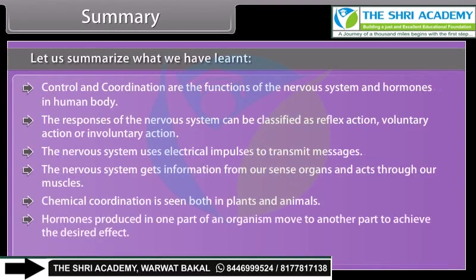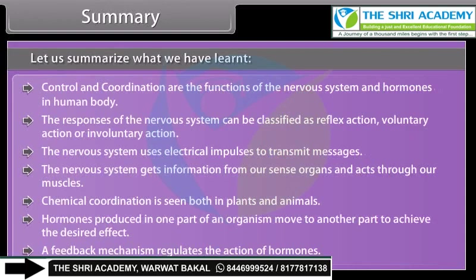Chemical coordination is seen both in plants and animals. Hormones produced in one part of an organism move to another part to achieve the desired effect. A feedback mechanism regulates the action of hormones.